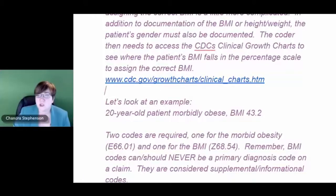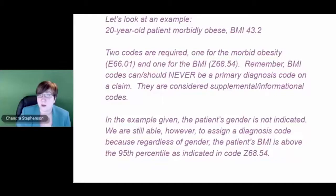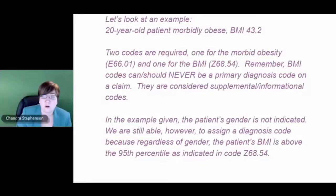Here's an example — this is actually one of the questions from the pre-employment exam for risk adjustment, and one I used frequently when hiring coders. This is a 20-year-old morbidly obese patient with a body mass index of 43.2. We need two codes: the first code for morbid obesity is E66.01, which defaults to morbid obesity due to excess calorie intake, as confirmed by the index and tabular. That code then instructs you to use an additional code to identify the patient's body mass index. Since this patient is 20 years old, they fall into the children's codes.